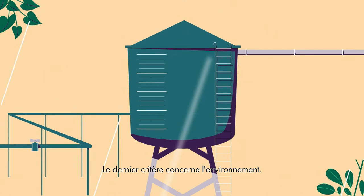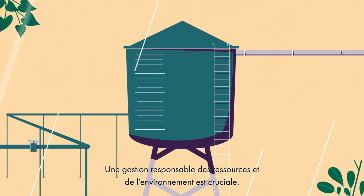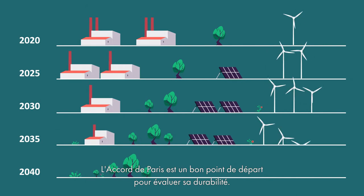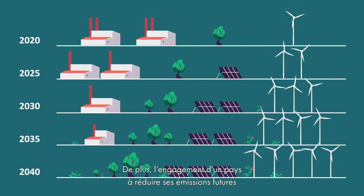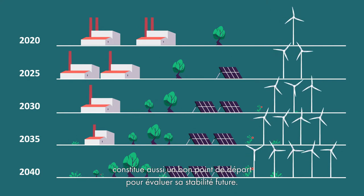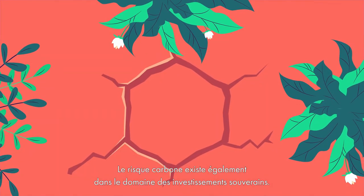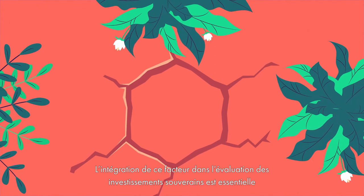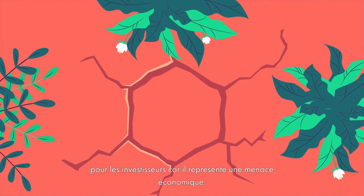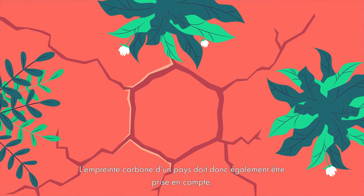The last criteria relates to the environment. Responsible management of resources and of the environment are crucial. The Paris Agreement may be an essential criterion in assessing a country's environmental sustainability. A country's commitment to reducing its future emissions provides a good starting point for evaluating its future stability. Carbon risk also exists in the sphere of sovereign investments. Integrating this factor into the sovereign investment evaluation is key to investors as it represents an economic threat. A country's carbon footprint is therefore also to be considered.